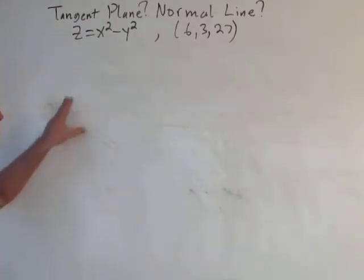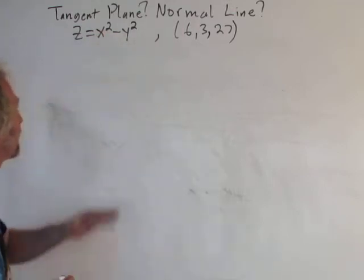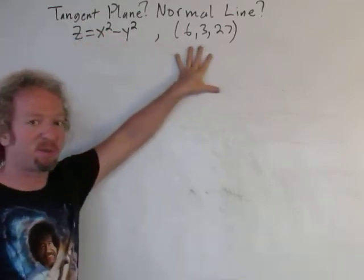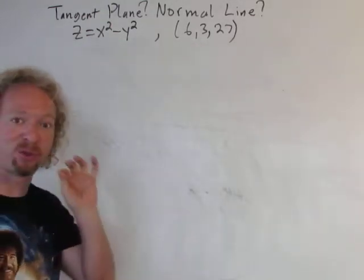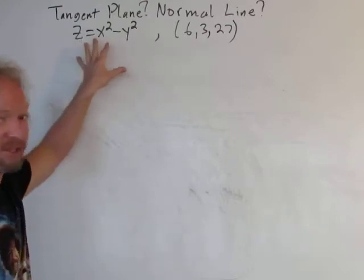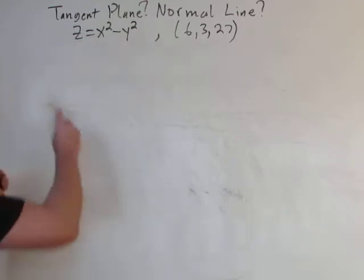Hey YouTube, so in this video we have a function of two variables and we have to find two things. We have to find the tangent plane at this point, the equation of the tangent plane, and we also have to find the equation of the normal line to this function. Solution: